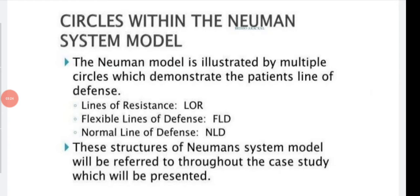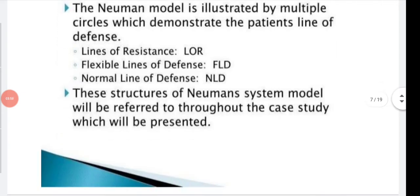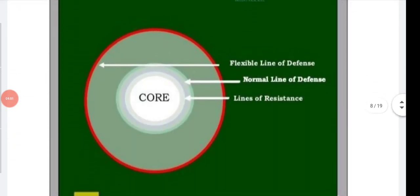The Newman model is illustrated by multiple concentric circles demonstrating the patient's lines of defense. There are three layers surrounding the central core: the Line of Resistance (LOR), the Normal Line of Defense (NLD), and the Flexible Line of Defense (FLD). The central core is innermost, with lines of resistance as the first layer, normal line of defense as the second, and flexible line of defense as the outermost.